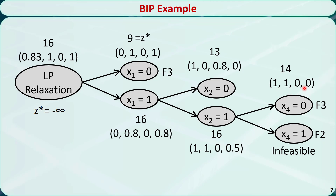The optimal solution to the other subproblem is x1 = 1, x2 = 1, x3 = 0, x4 = 0, and the z value is 14. This is fathomed based on test 3 because binary-restricted variables x1 through x4 are all 0 or 1. We update z* because 14 is better than 9. After updating z*, we recheck unfathomed subproblems. We find only one unfathomed subproblem remaining, but its upper bound of 13 is worse than the current z* value of 14. So this branch is also fathomed based on test 1.